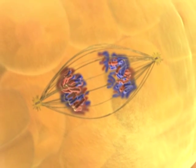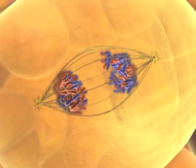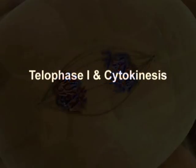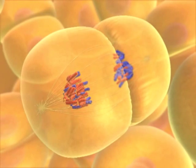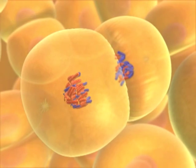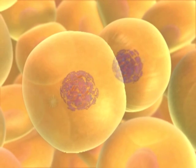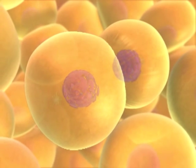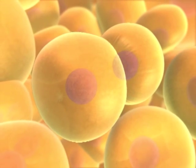The next stage begins when homologous chromosomes separate from each other and move toward opposite poles, with each chromosome still consisting of two sister chromatids. This cell began meiosis with 46 chromosomes, but each daughter cell now has only 23 chromosomes.